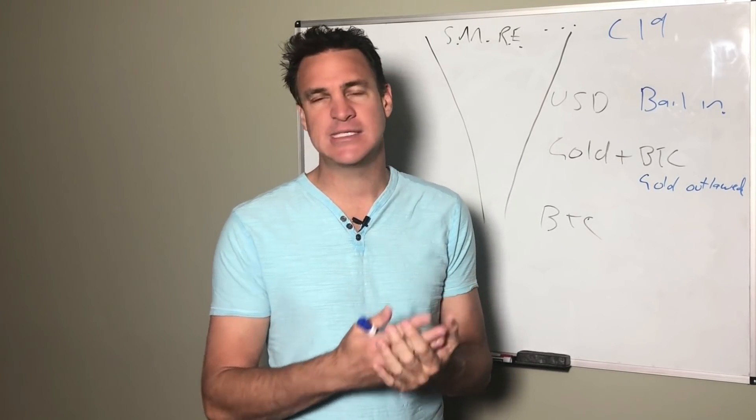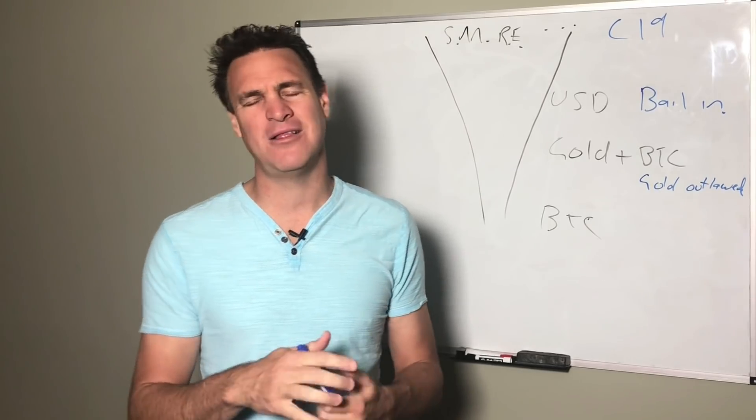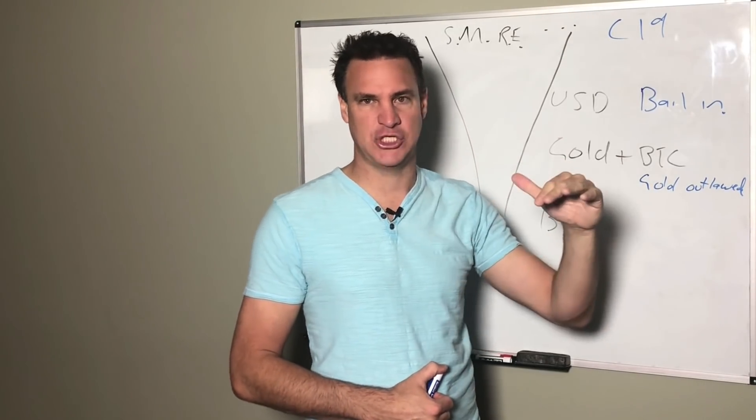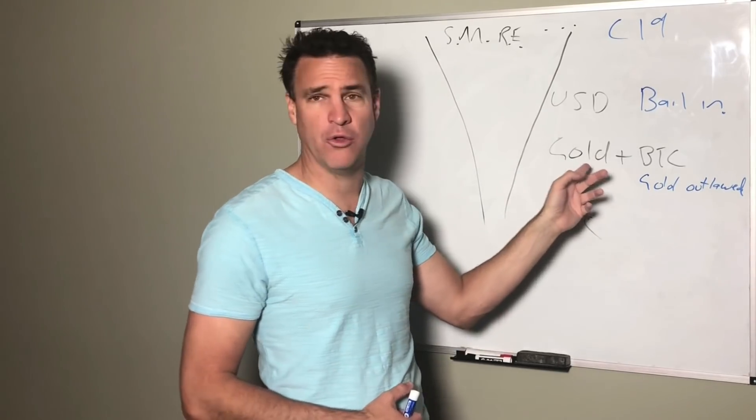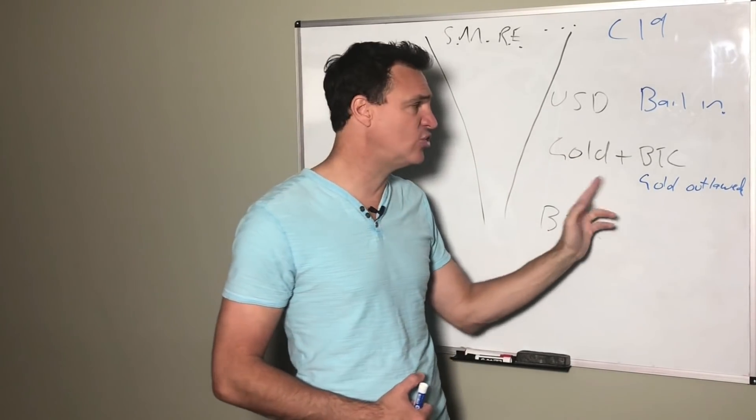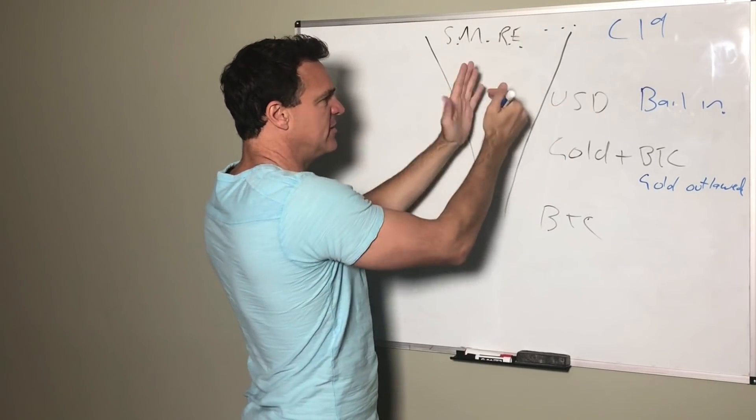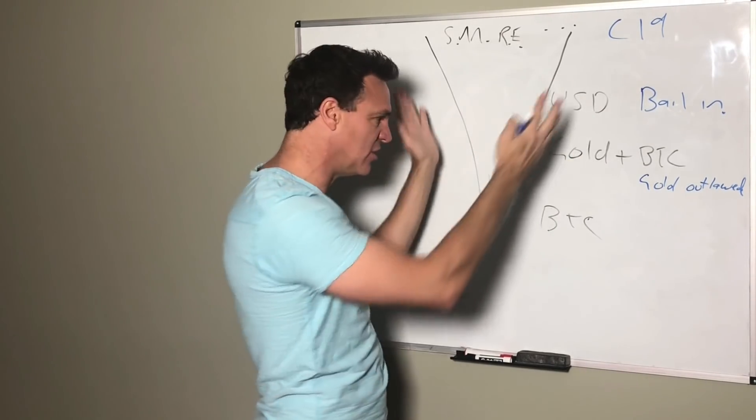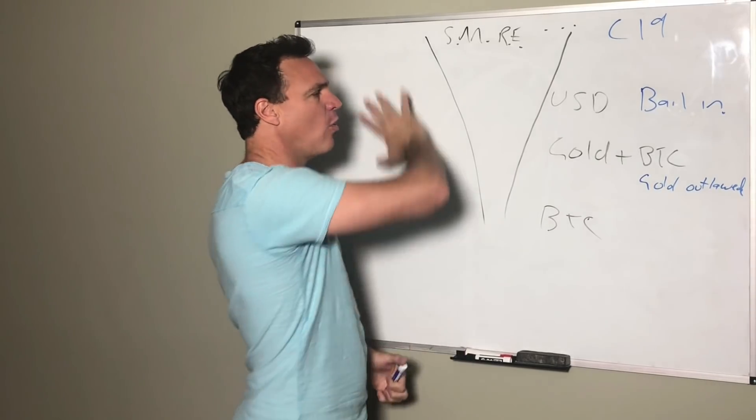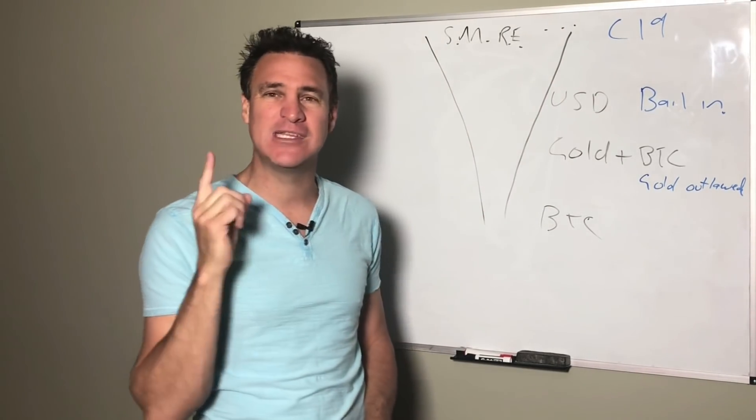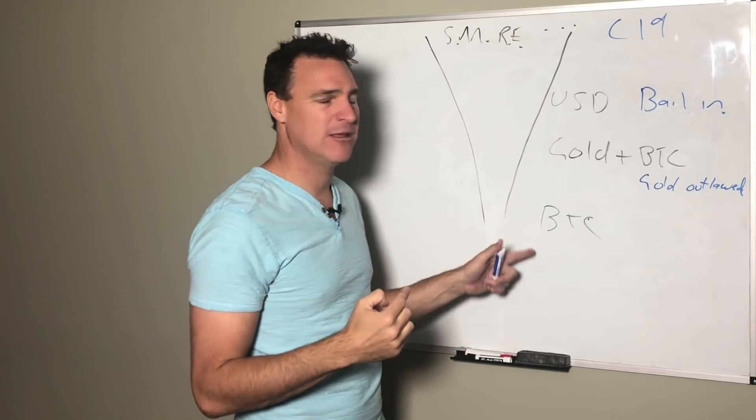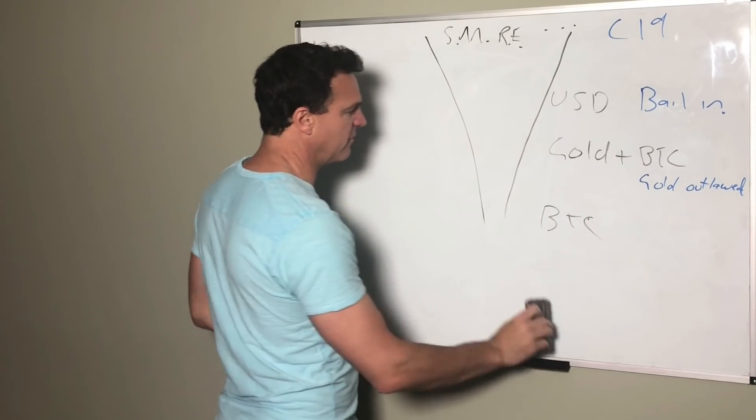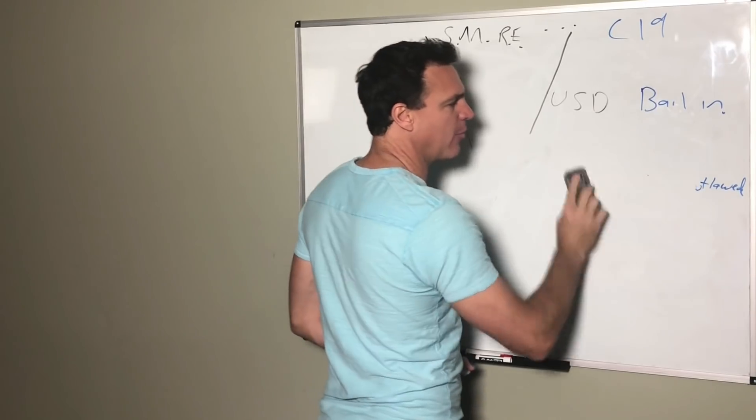If we see a bail-in and people's bank accounts get chopped in half, you will see the price of Bitcoin go absolutely ballistic, as will gold. These two are going to be great because this huge amount of wealth flows into here and then all three of these eventually have to jump into here and you've got quadrillions of dollars trying to get into Bitcoin where there is only 21 million of them and you're gonna see the price of Bitcoin go mental.